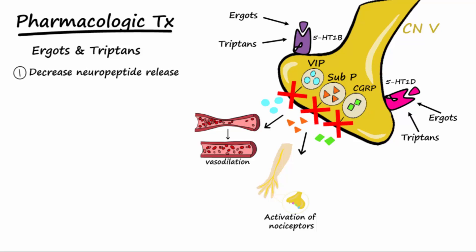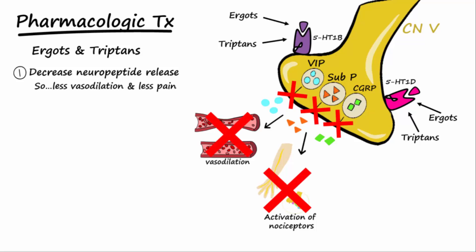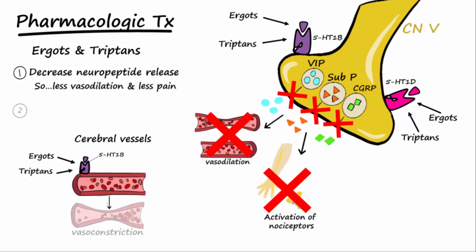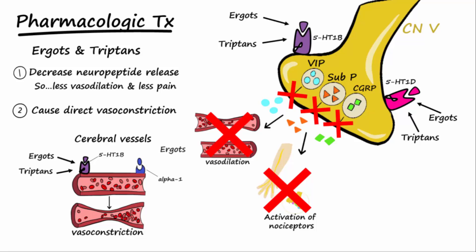This in turn causes a decrease in cerebral vasodilation and a decrease in migraine pain. There are also 5-HT1B receptors on cerebral vessels, and ergots and triptans stimulating these causes vasoconstriction, taking away the vasodilation associated with migraines. Ergots also activate alpha-1 receptors on cerebral vessels, causing further vasoconstriction.